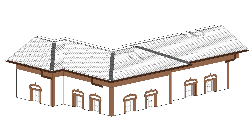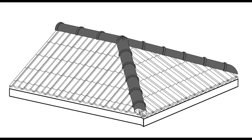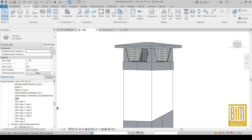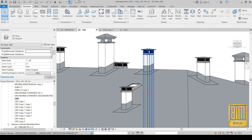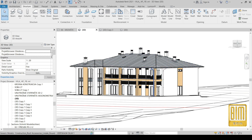Hello and welcome to Beameron Revit tutorials. Today's tutorial is the second part about the roof ridge. Just to remind you, in the previous tutorial we modeled the roof ridge family using the beam family. In short, I just modified the profile of the beam family and added one nested family as a connection between the elements of the roof ridge.